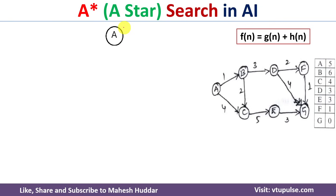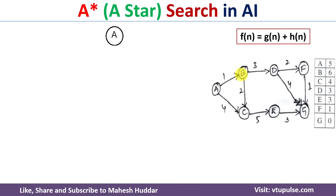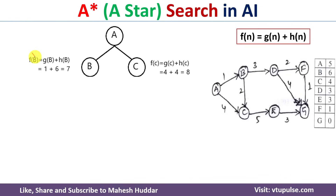We will apply the A* search algorithm step by step. We start with the initial state A. First, we check whether A is the goal state — it is not, since G is the goal state. So we expand A. There are two reachable nodes: B and C. We need to calculate the cost for both B and C using f(n) = g(n) + h(n).